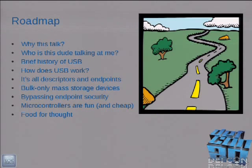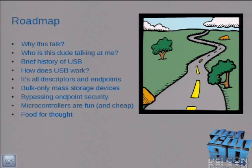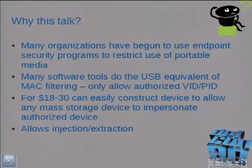So let's get started. Just a little bit of a road map. Why this talk? Who is this handsome guy up here? A little bit of a brief history of USB. How does USB work? We'll talk about descriptors and endpoints in USB. Then we'll delve into mass storage devices and how they work. And then we'll talk about the good stuff — how do you bypass endpoint security? We'll talk about some microcontrollers, devices you can build for 20 bucks or less, and a little bit about some future directions.